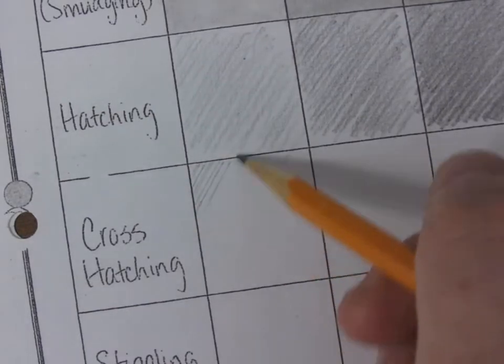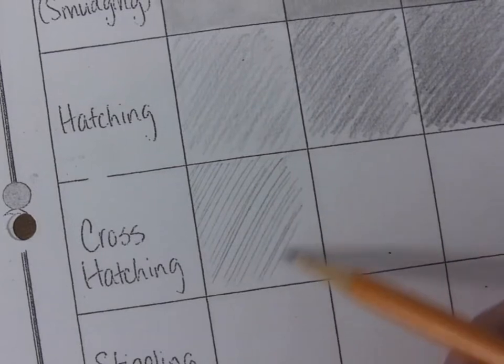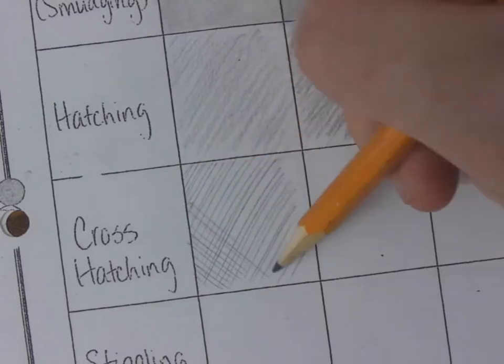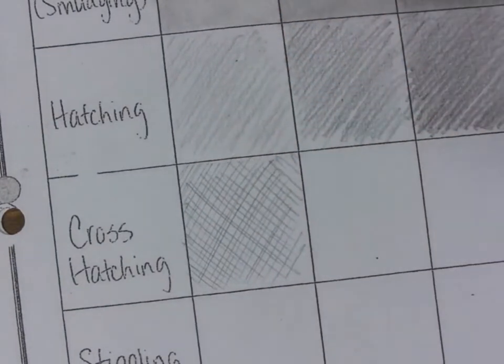Cross hatching, you're going in one direction and then you're going to go over in the opposite direction. So in the first one I'm just going to do one layer of each because I want to keep it nice and light.